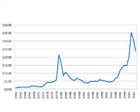This is a graph of the yearly average price of silver from 1960 to 2013. In 1960, the yearly average price of silver was $0.91 per ounce. In 2013, the yearly average price was $23.79 per ounce, about 26 times as high as the price of silver in 1960.